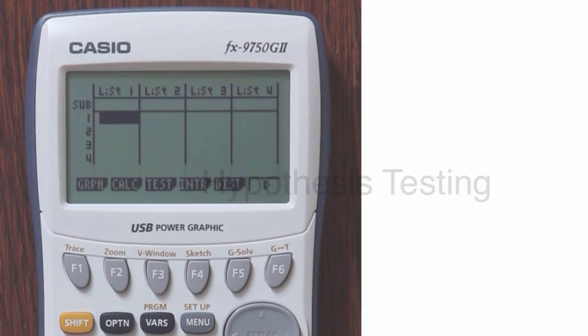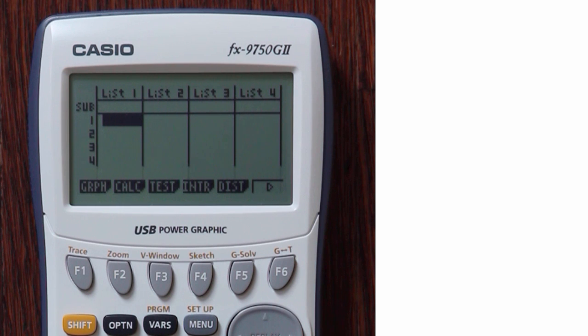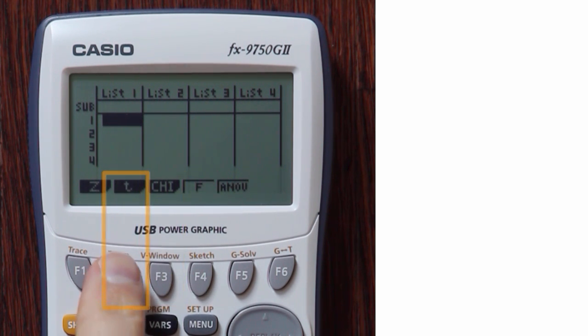I can exit out to the main stat page. Had I instead wanted to run a hypothesis test, I could have, instead of choosing enter, chosen test for hypothesis test. I again would select t and 1s.